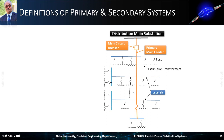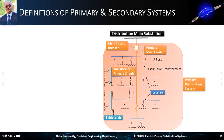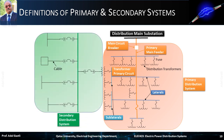Several laterals are connected to the main feeder. Several sublaterals can also be connected to laterals. The transformers connected to the sublateral are represented by their primary circuit only if their secondary circuit is not represented in the schematic diagram. This orange colored part of the circuit is called the primary distribution system.